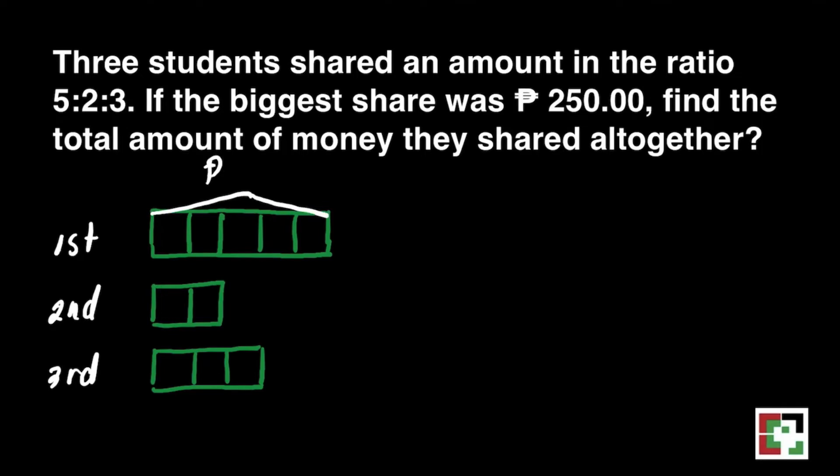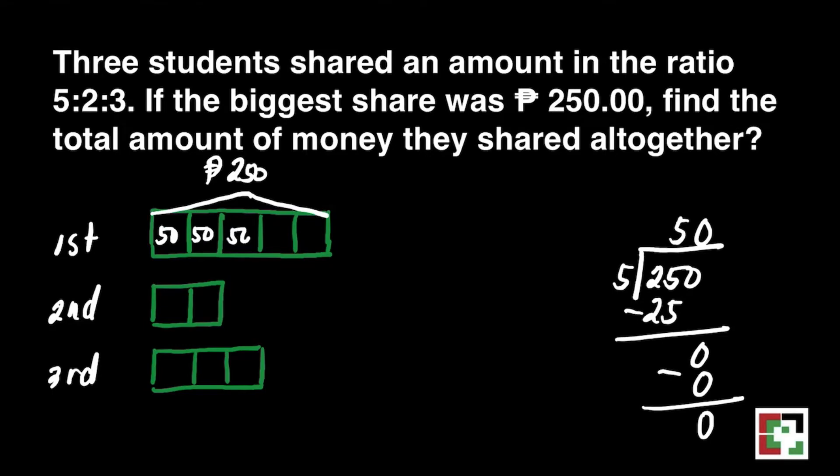It says there that the first student has a total money of 250 pesos. How are we going to get the value of each box of the first student? We will just divide 250 by 5 and it will give us 50. We can write 50 in each box. And whatever is the value of each box of the first student, that will be the value of each box of the second and third student.